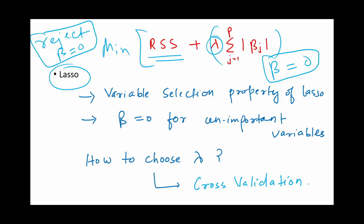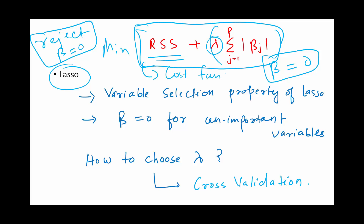And the variable rejection is automatic — you don't have to do it manually. Like in the previous case with subset selection, we had to run it, check the BIC plot, check the R-squared, do cross-validation, and so on. Here, in the estimation procedure itself, we find some of the beta values to be zero by changing the cost function. This cost function automatically takes care of the variable reduction.